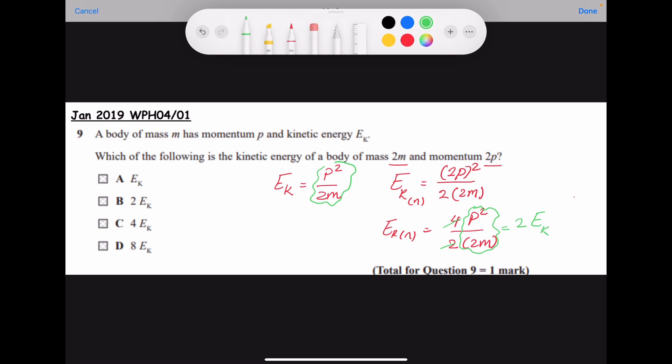What happened when you double the mass and double momentum? The kinetic energy doubled as well. The correct answer for question 9 is E.